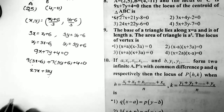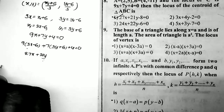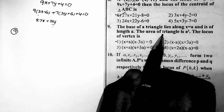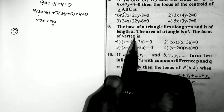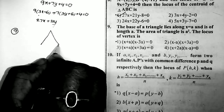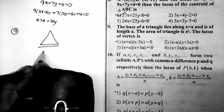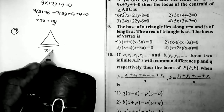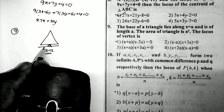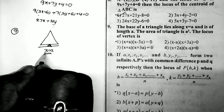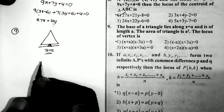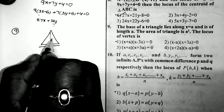The ninth question: the base of a triangle lies along the line x = a and is of length a. The area of the triangle is a². We need to find the locus of the vertex. The base equation is x = a, the length of the base is a, and the area of the triangle is a².